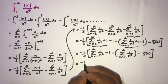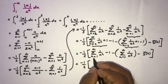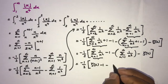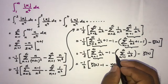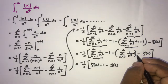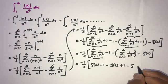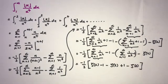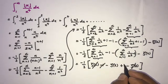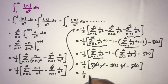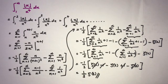Substituting in, we get minus one-third times: (zeta(2) minus 1) minus (zeta(3) minus 1) minus zeta(2). The zeta(2) terms cancel, the minus ones cancel, leaving minus one-third times minus zeta(3), which equals zeta(3)/3. So the answer is zeta(3)/3. If you like this video, please subscribe to this channel. Thank you for watching.